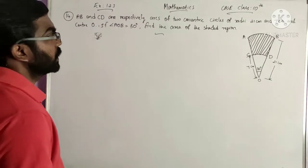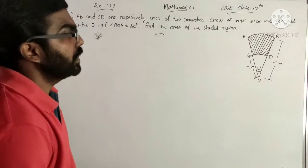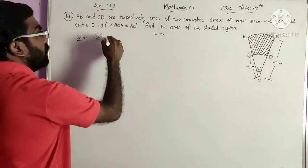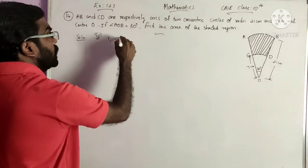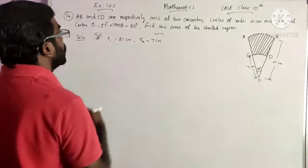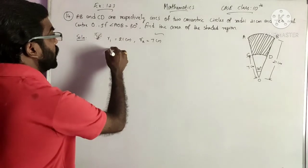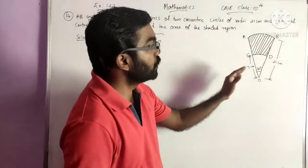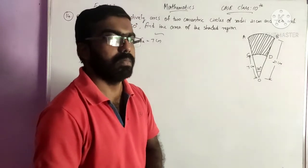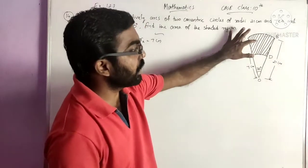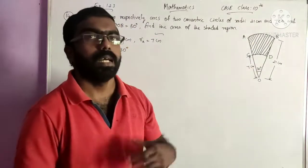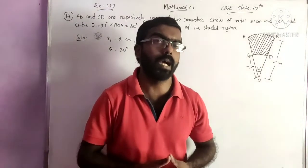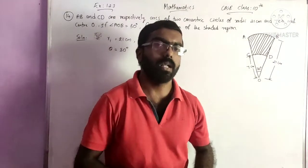The next question: AB and CD are respectively arcs of two concentric circles of radii 21 cm and 7 cm, so R1 equals 21 cm and R2 equals 7 cm. Angle AOB equals 30 degrees, so theta equals 30 degrees. Find the area of the shaded region. We have two sectors with the same central angle of 30 degrees, so the required area equals area of the larger sector minus area of the smaller sector.